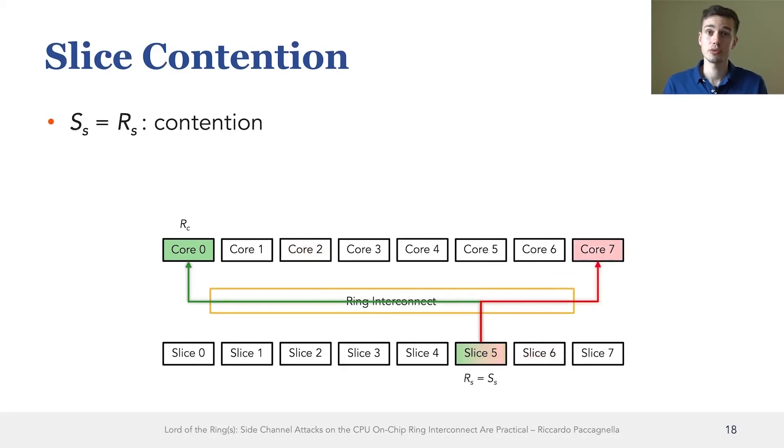The first observation that we made is that when the receiver slice and the sender slice are the same, we always see contention, regardless of the cores. The reason why this is the case is that there is contention on the slice's input and on the slice's output. And this is different from traditional side channel attacks, because we made sure that the sender and the receiver are targeting different cache sets.